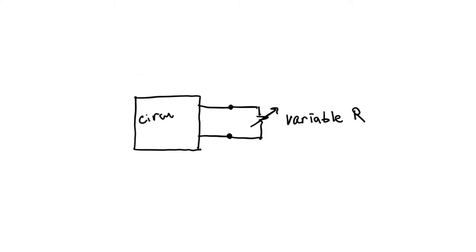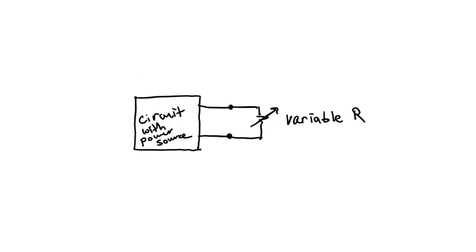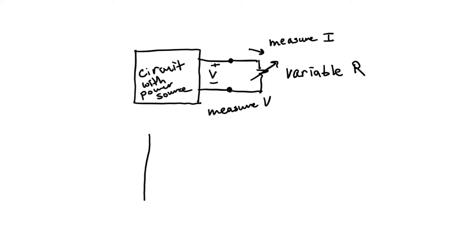If our black box has a power source inside of it, then this method will work. As I change the variable resistor, I'm going to measure the current and the voltage — or I could just measure the voltage and divide by the variable resistance using Ohm's law. Then I'm going to make a plot of V versus I, and if I get a line when I do this experiment, then I have a linear circuit inside the black box.